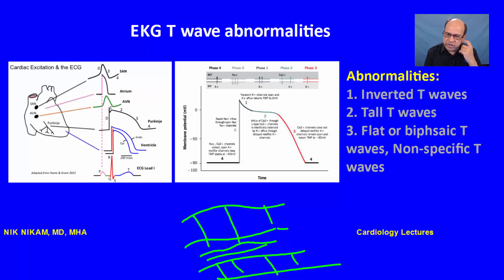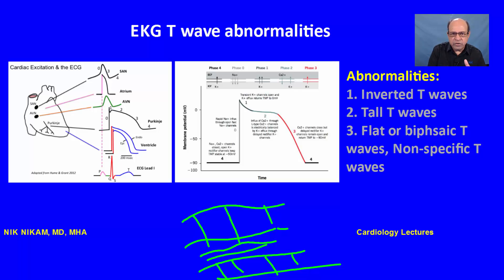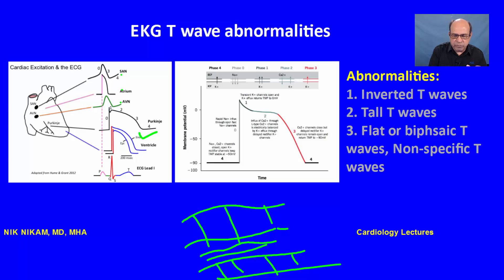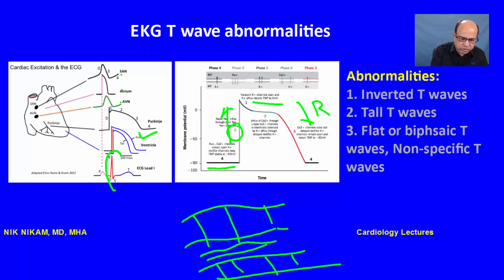Here is the action potential. I did an extensive presentation on myocyte and sinus node action potentials — I'll put a link to that at the end of this presentation. I'm going to run through it quickly to get to the T waves. Here is the action potential in the sinus node, atrium, AV node, and the ventricular action potential which we are interested in. The action potential has a resting phase, active depolarization phase, a plateau, and a repolarization phase.